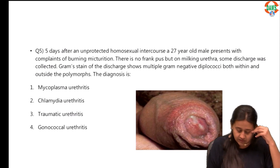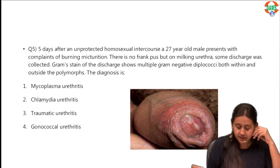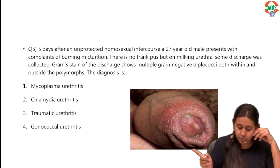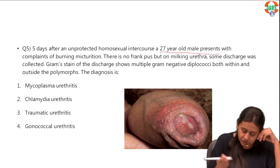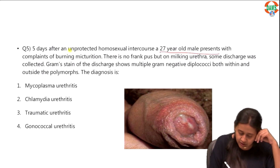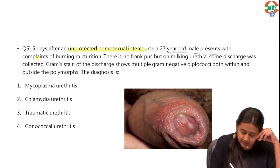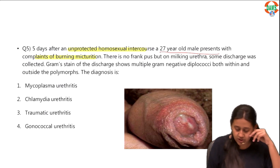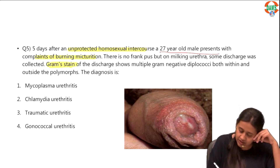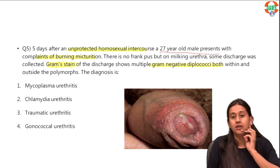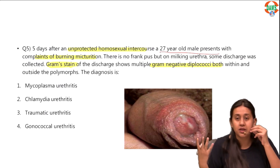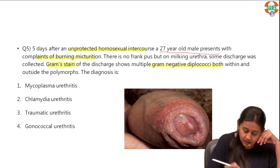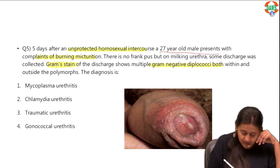The next question: five days after unprotected homosexual intercourse, a 27-year-old male presents. Key features: unprotected intercourse, burning micturition, and on gram stain you see gram-negative diplococci. This is a very classical example of gonococcal urethritis.